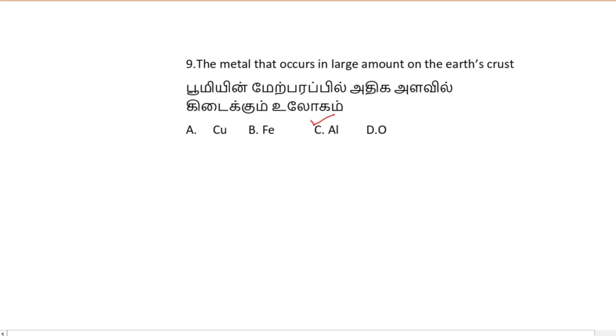But among all the elements including metals, the element occurring in the largest amount on the earth's crust is oxygen.